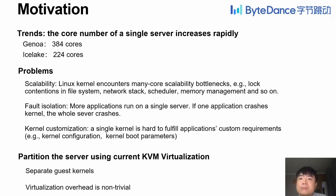For example, the lock contentions in the file system, network stack, process scheduler, memory management, and so on. The second problem is fault isolation. If one application crashes the kernel, the whole server crashes. These things can be even worse if the number of applications increases.